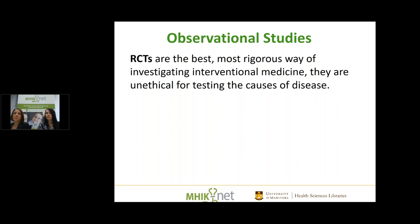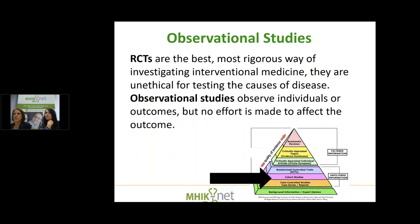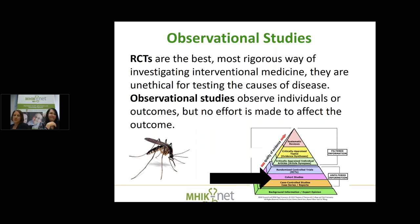For observational studies: randomized control trials are the most rigorous way of investigating interventional medicine, but they're unethical for testing the causes of disease. Observational studies are a bit lower on the evidence pyramid — you observe but make no effort to affect the outcome. For example, West Nile virus: it would never be ethical to put people in a room full of West Nile-infected mosquitoes to see what happens. You just have to find those people and observe the course of the disease. Sometimes observational studies are the best evidence you can have, and sometimes an RCT would be appropriate.